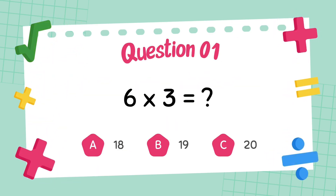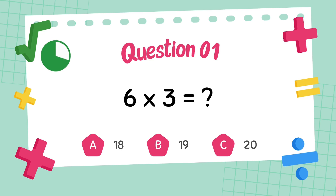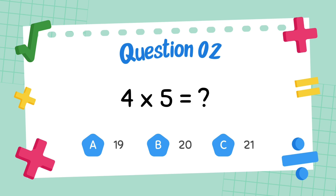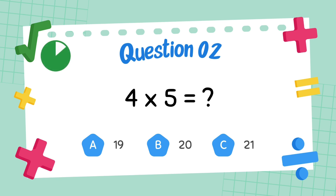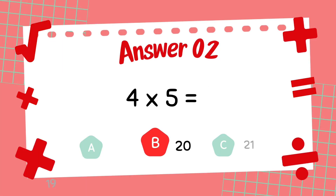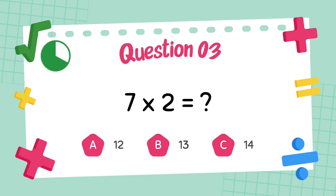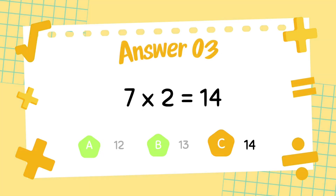What is 6 multiply 3? The answer is 18. What is 4 multiply 5? The answer is 20. What is 7 multiply 2? The answer is 14.